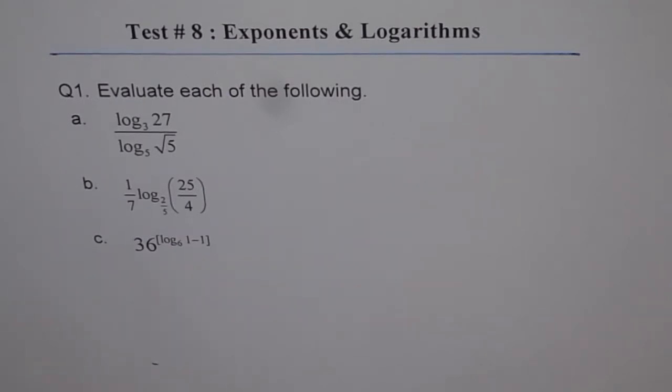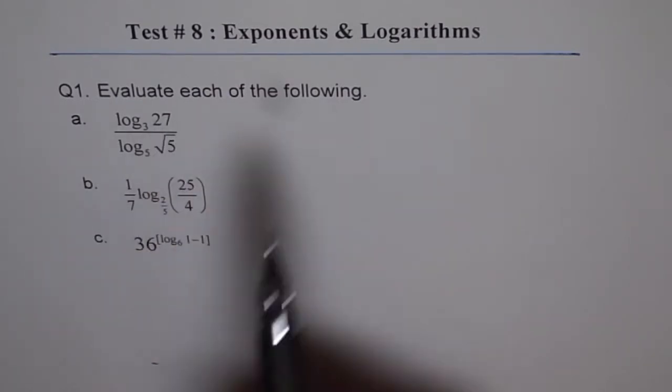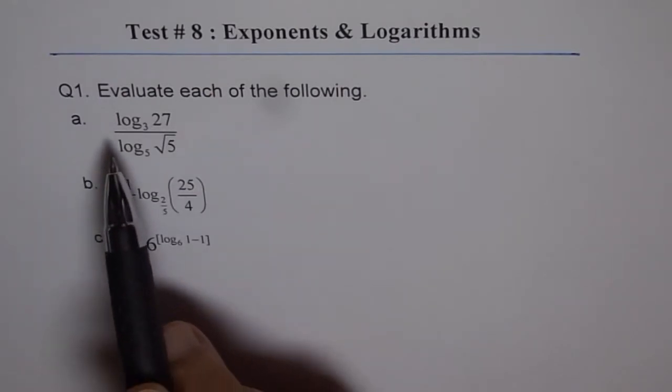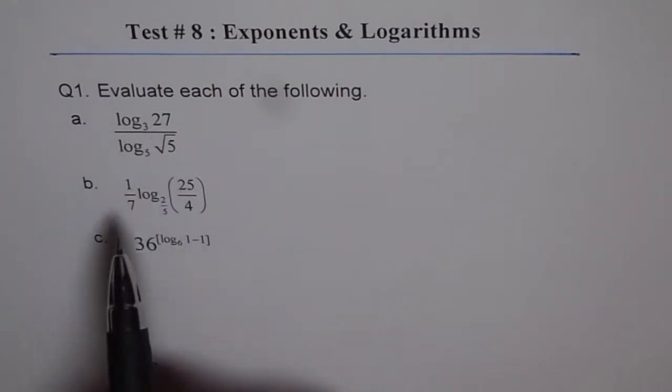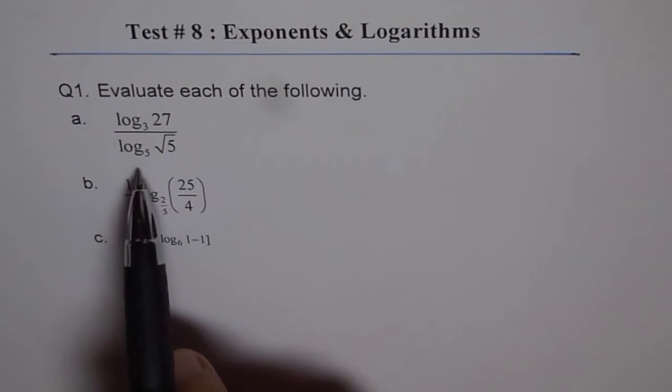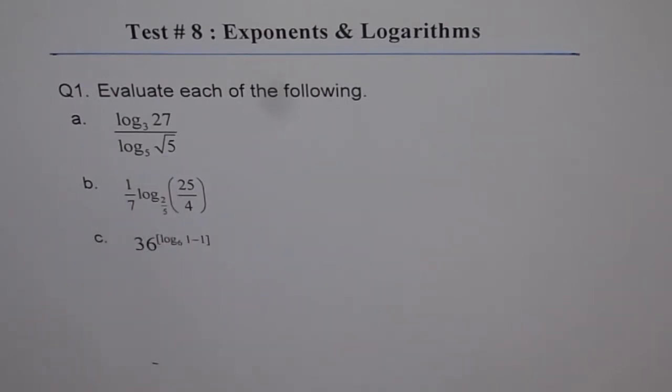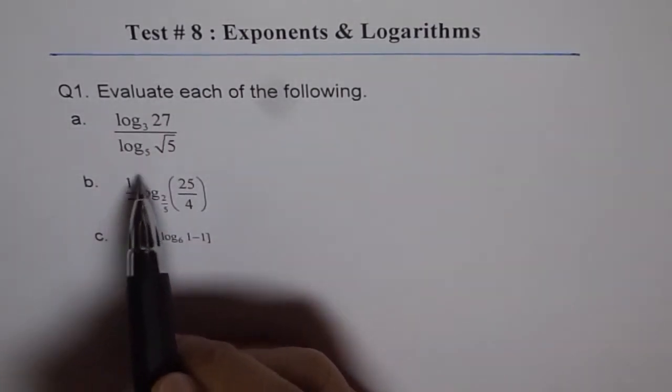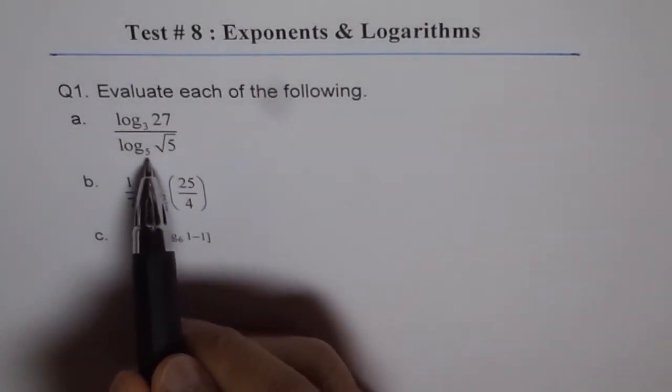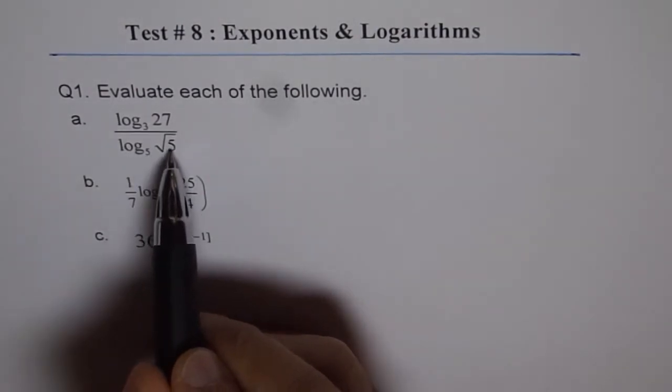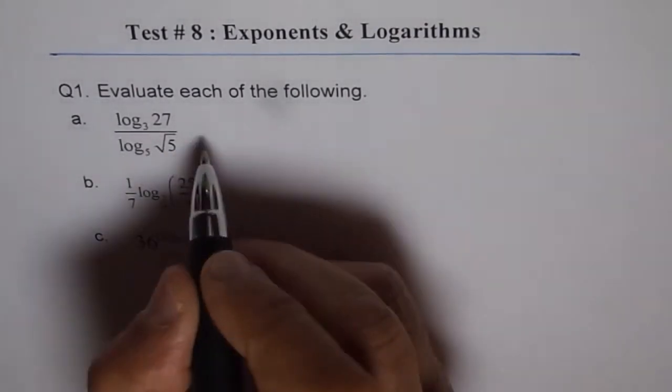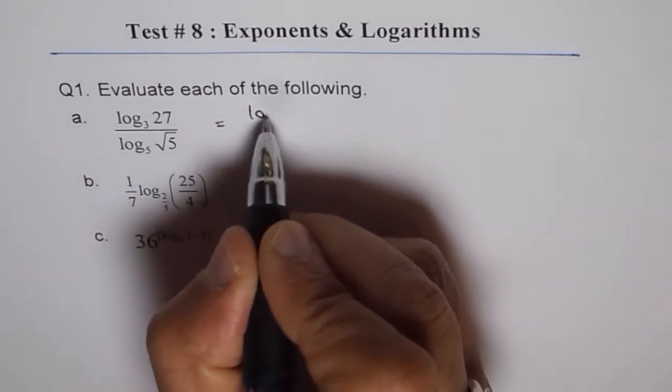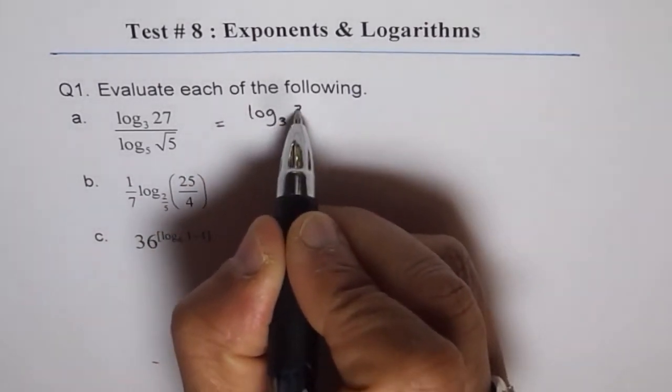Here is question number 1. Evaluate each of the following. Part A: log to the base 3 of 27 divided by log to the base 5 of square root 5. The strategy will be to write 27 as 3 to the power of something and 5 in terms of 5 because base is 5.